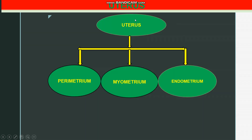The two oviducts lead into a single bag-like structure called the uterus. The uterus consists of three distinct regions: the outer perimetrium, the middle myometrium, and the inner endometrium. The perimetrium is an outer thin membranous layer. The myometrium is the middle layer and consists of smooth muscles which exhibit strong contractions during childbirth.